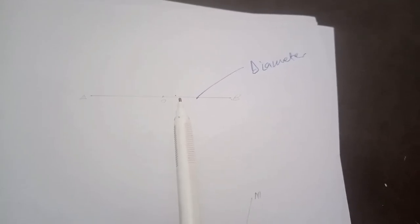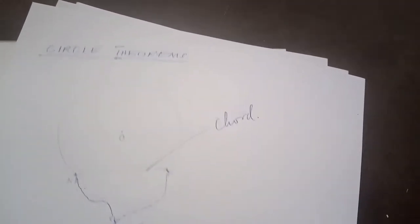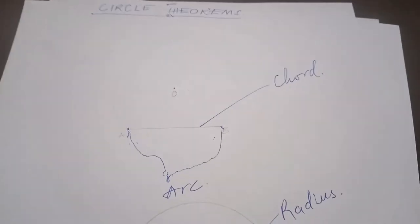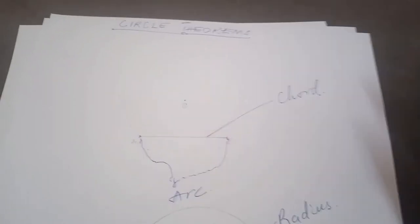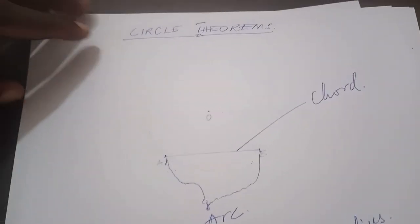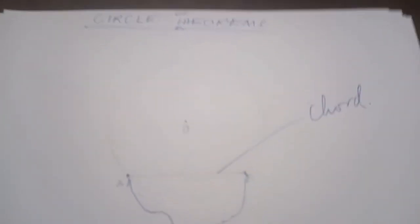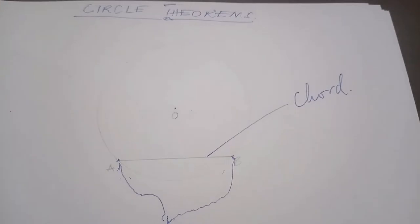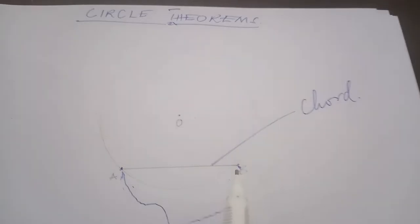There are many other things to learn about the circle that will help us understand circle theorems very well. Another thing I want us to learn about is the segment of a circle. Simply put, a chord divides a circle into two segments. So in the course of this study, whenever I mention segments it means that a chord is involved. A chord divides a circle into two segments.